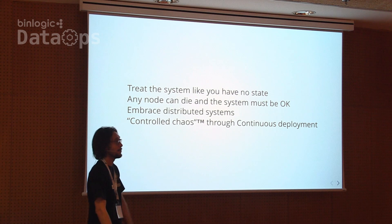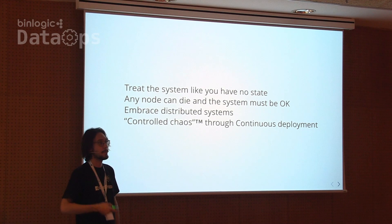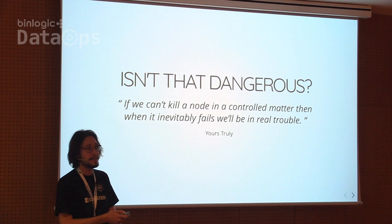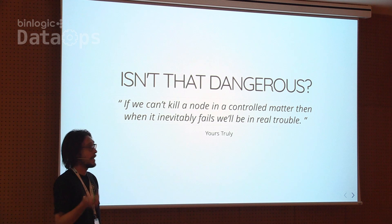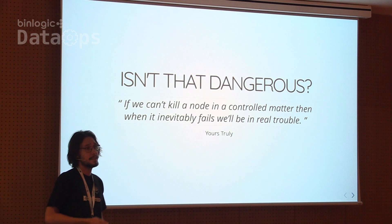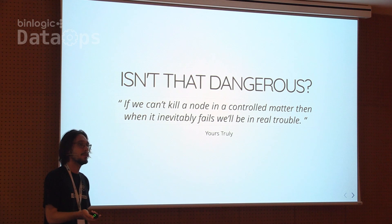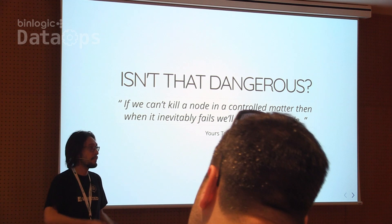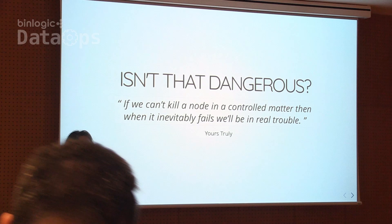This is what I call controlling chaos through continuous deployment — bringing continuous deployment practices from web applications and applying them to the world of databases. People often ask if this is dangerous. The reality is: if we cannot kill a node when we want to, then when it fails for unexpected reasons, we're going to be in real trouble. We want to continuously exercise failures in a controlled way, so that if there is any problem, we can fix it quickly before it becomes an incident.